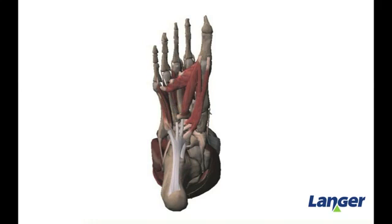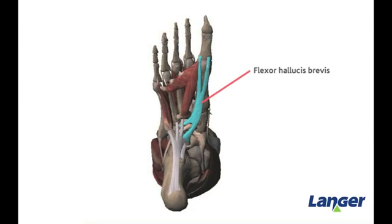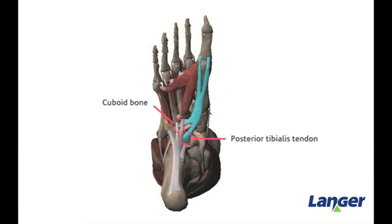The third layer within the plantar group has three muscles in total, which are associated with the little toe and the great toe. The first muscle is the flexor hallucis brevis, which lies underneath the flexor hallucis longus tendon. The muscle has two origin points and two insertion points.